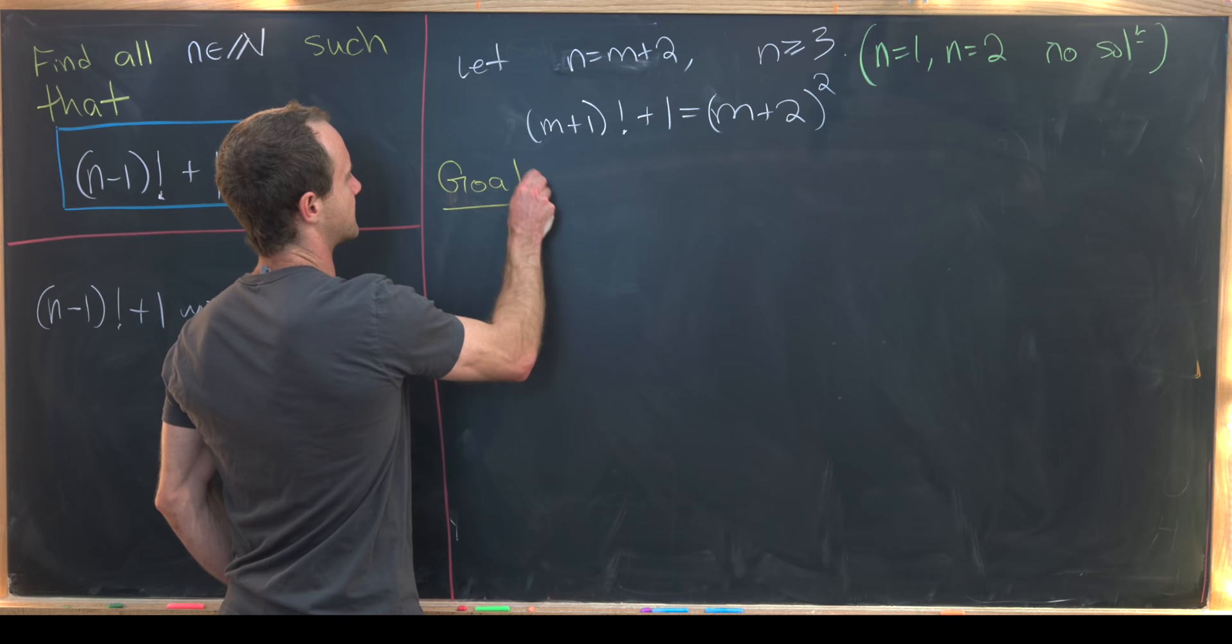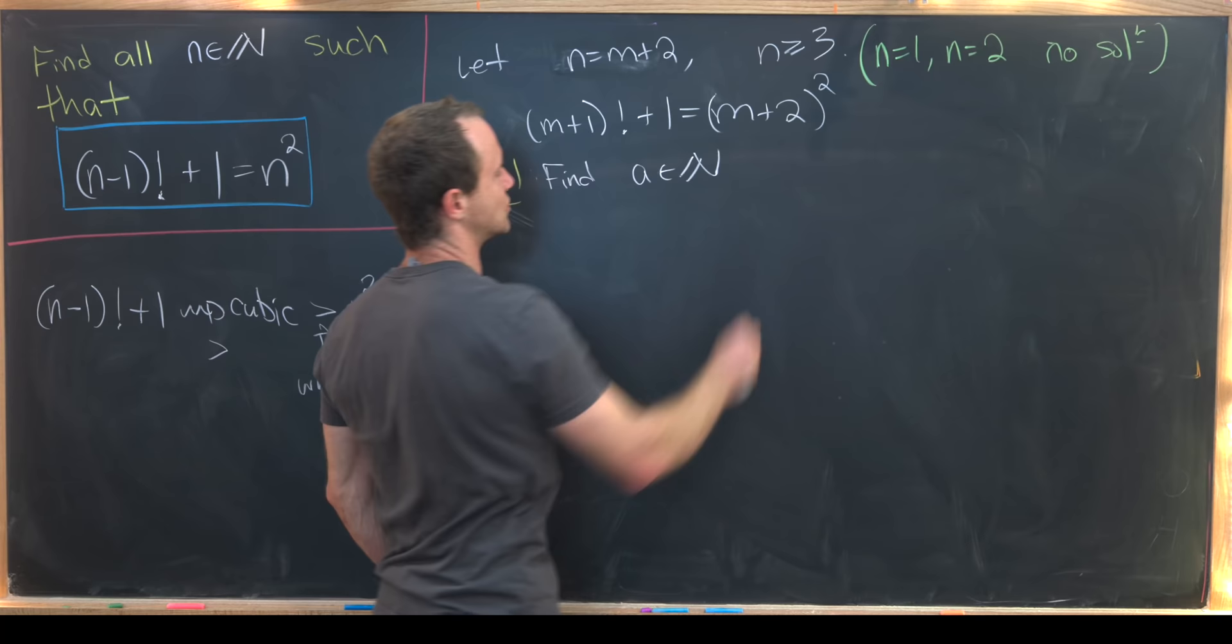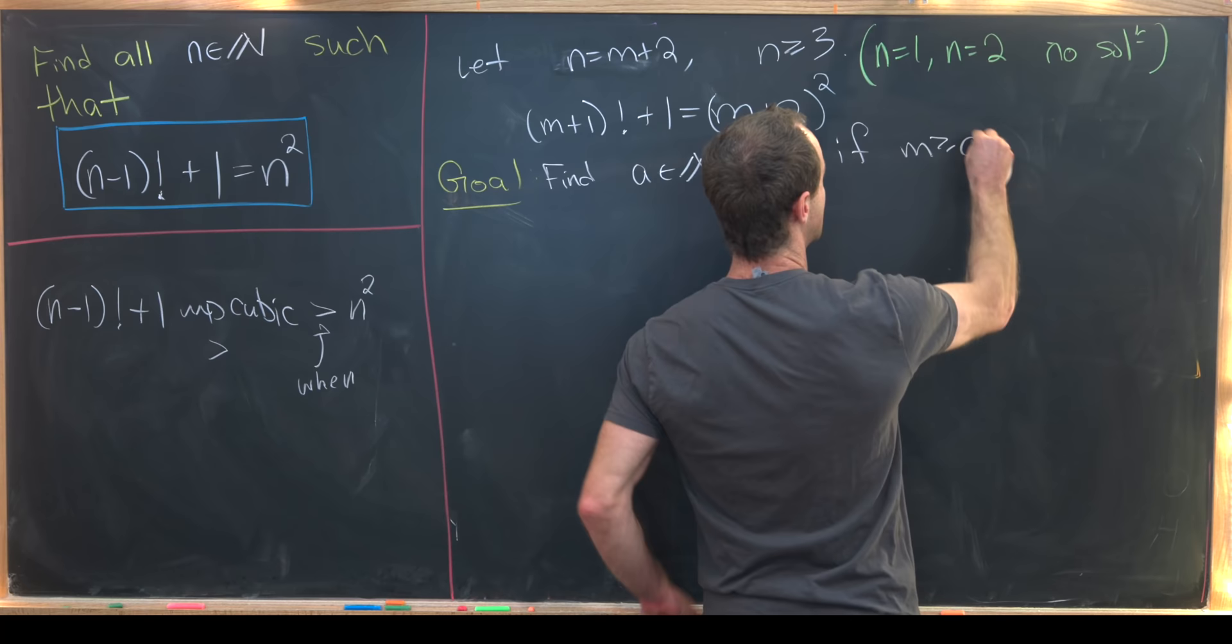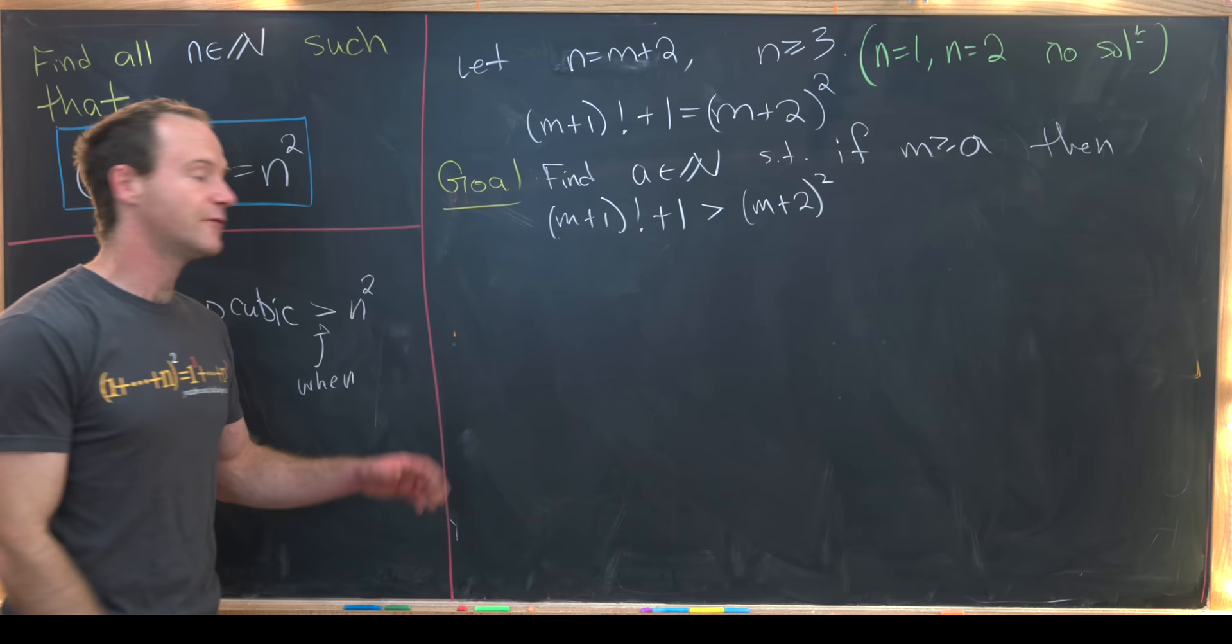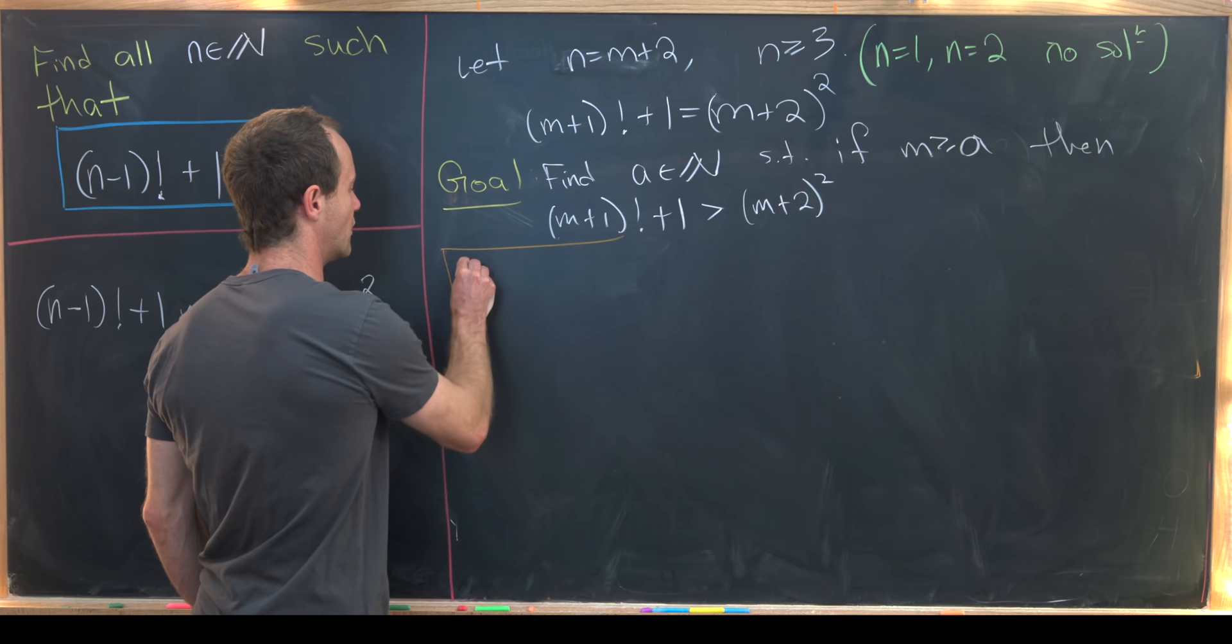Okay so let's write a little bit of a sub goal. So I'll write it here and that is to find some number which I'll call a which is a natural number such that if m is bigger than or equal to a then m plus 1 factorial plus 1 is strictly bigger than m plus 2 squared.